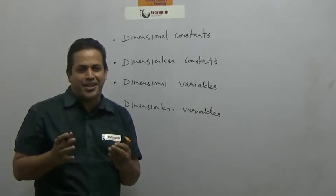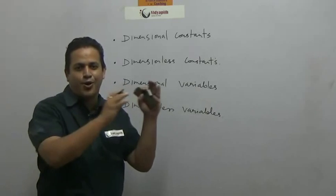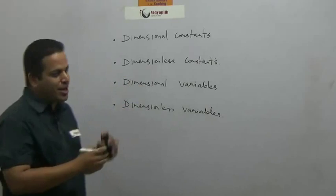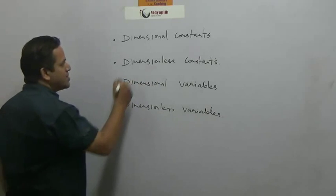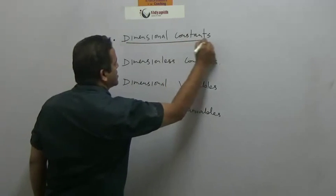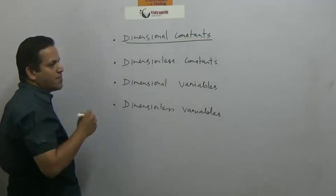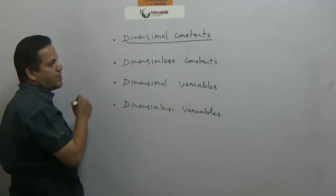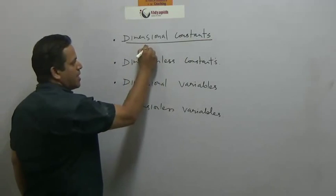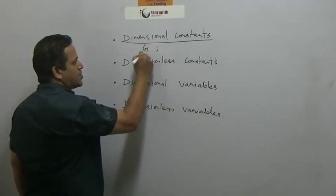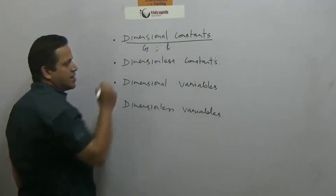So whichever physical quantity you are dealing with, try and divide them under a suitable head or under a suitable name. Let me give you some examples on these. Dimensional constants - it is evident from the name that the constant should have dimensions. Examples are gravitational constant G and Planck constant H.